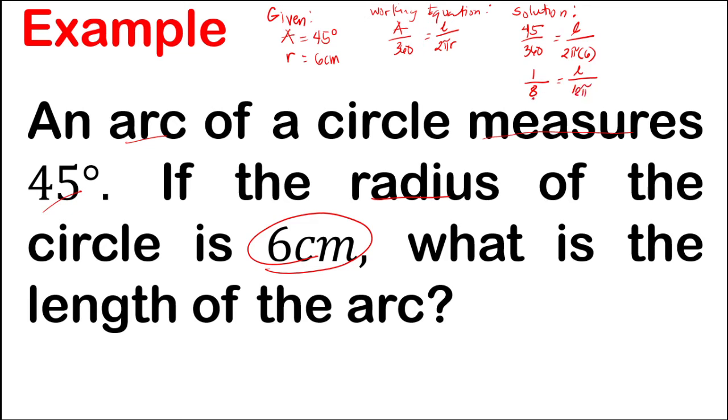Now, by cross multiplication, we will now arrive with 12 pi is equal to 8 times the arc length. And to get the arc length, divide both sides by 8. So the arc length is equal to 12 pi over 8. Now, let's evaluate what is 12 pi. Pi is approximately 3.1416.